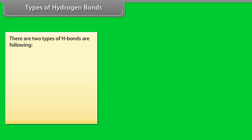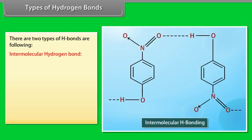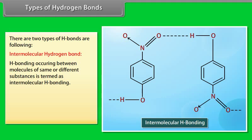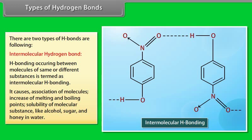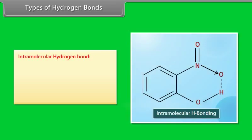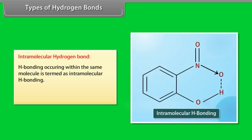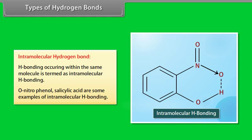Types of hydrogen bonds. Intermolecular hydrogen bond: hydrogen bonding occurring between molecules of the same or different substances; it causes association of molecules, increase in melting and boiling points, and solubility of molecular substances like alcohol, sugar, and honey in water. Intramolecular hydrogen bond: hydrogen bonding occurring within the same molecule — o-nitrophenol and salicylic acid are examples of intramolecular hydrogen bonding.